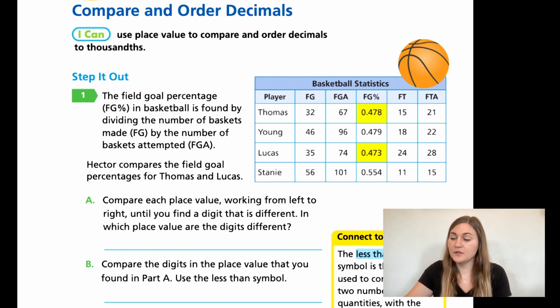So if we look at the ones place, notice how they are both zero. Then in the tenths place, they're both fours. In the hundredths place, they're both sevens. It's not till we get to the thousandths place that they're different. One is eight and one is three. So in what place value are they different? They are different in the thousandths.